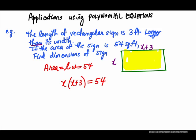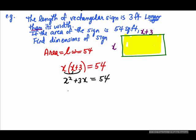We'll solve for x using the zero product theorem. We don't have a zero yet, so the key is to get rid of the parentheses — distribute the x: x squared plus 3x equals 54. To use the technique we want, we have to get zero on one side. I'm going to subtract 54, and put in the two parentheses to remind us that we need to factor.